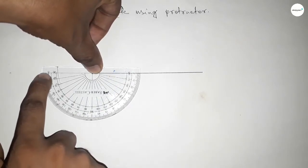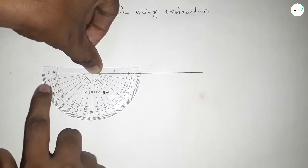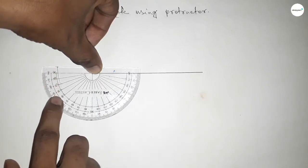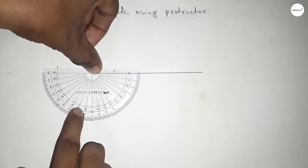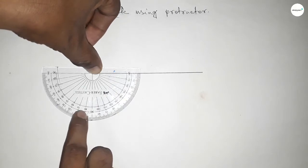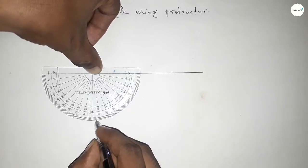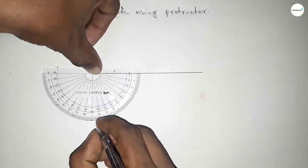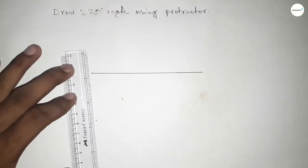So this is 180 degree angle. Now counting 95 degree angle. So this is 10, 20, 30, 40, 50, 60, 70, 80, 90, and this is 95. So by adding 95 degree angle with 180 degree, then we can get 275 degree angle.